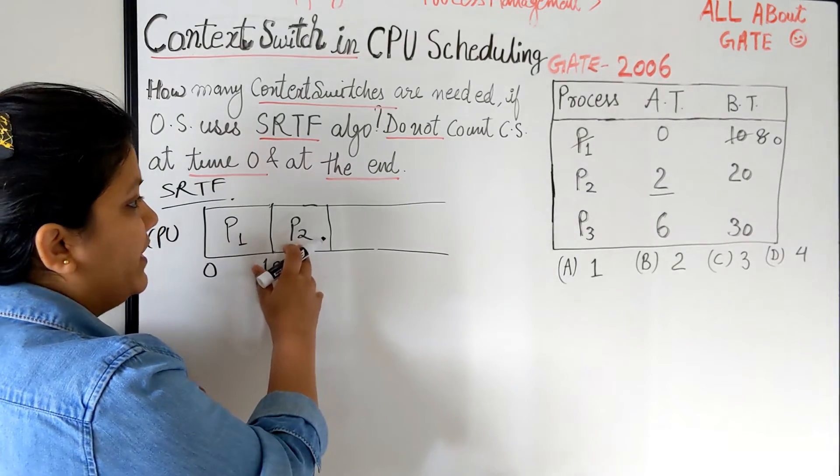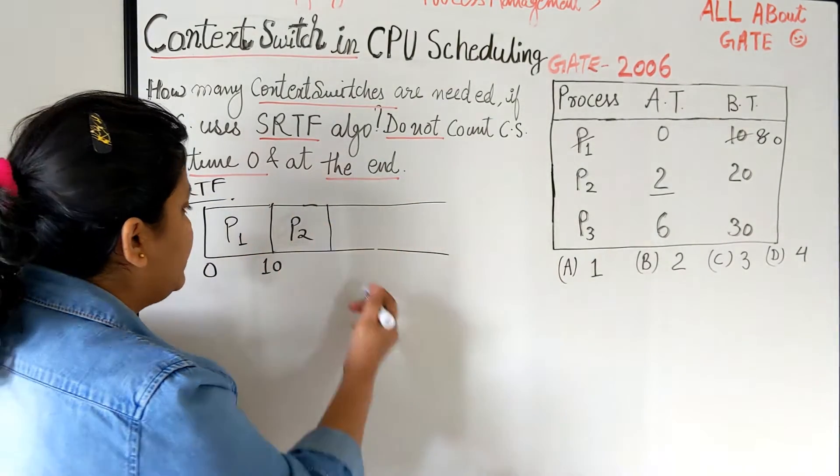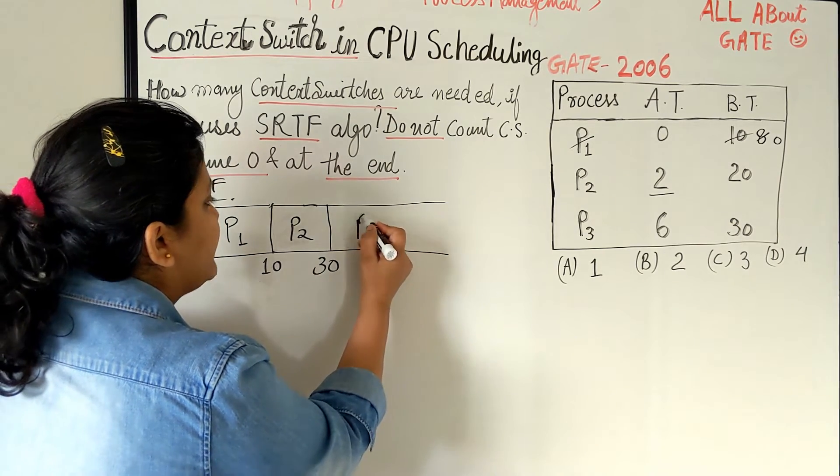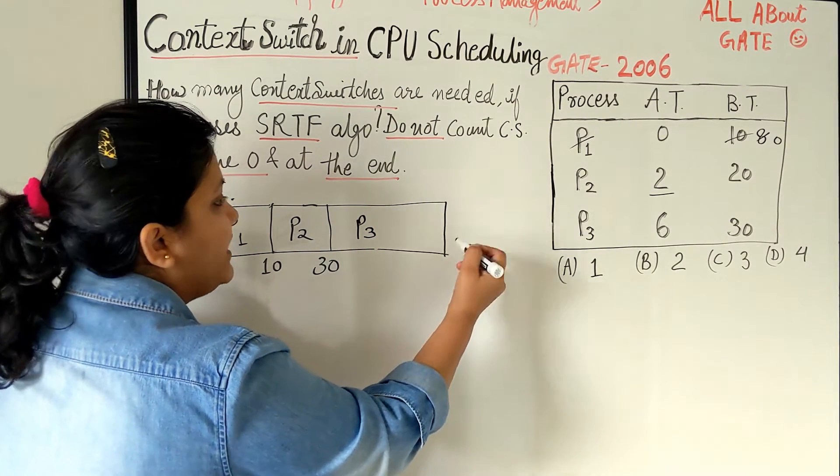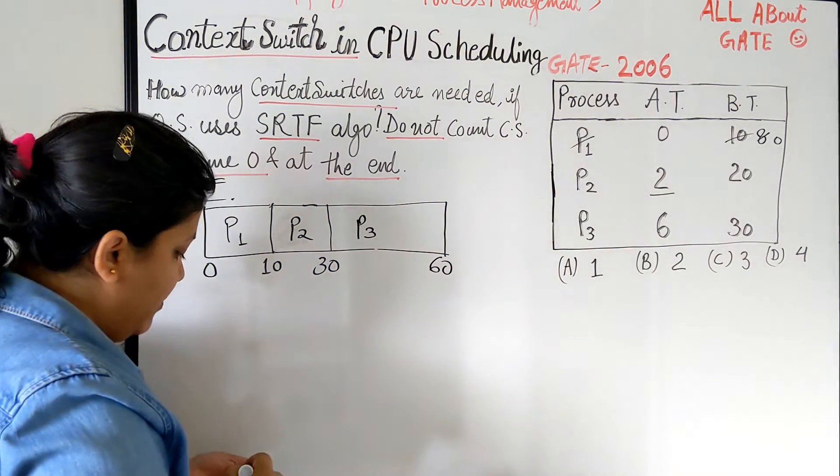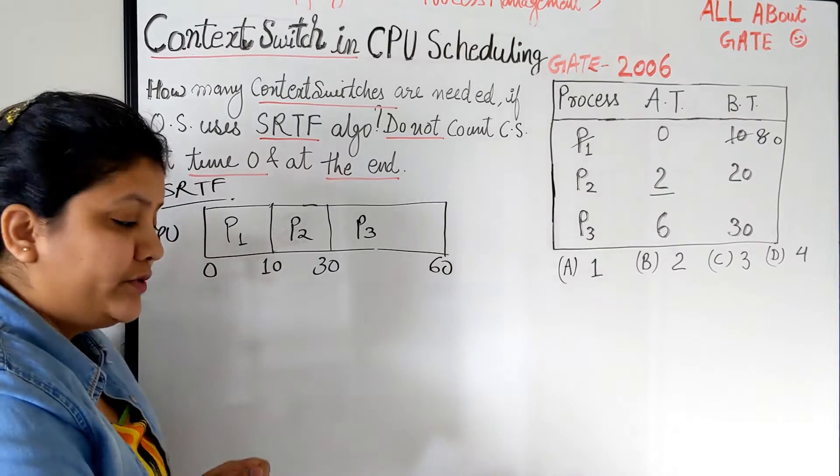So I am going to put my P2 here which is going to run for 20 burst. So that becomes 10 plus 20, which is 30. And the next and the last process to run is P3 which needs 30. So 30 plus 30 is 60. So this is how the CPU scheduling is going to take place.